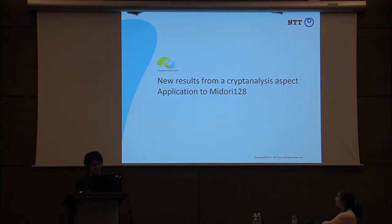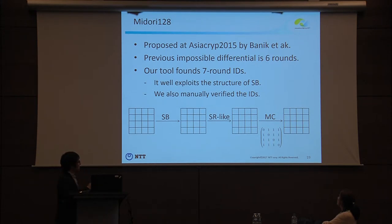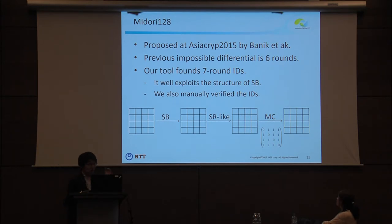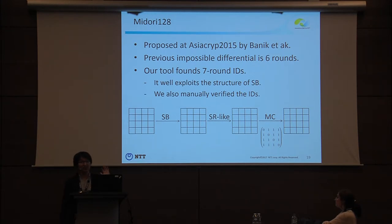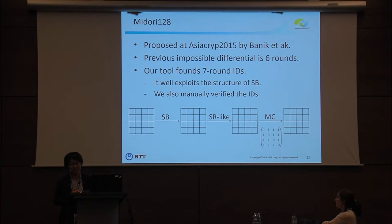Next, the application to Midori. Midori was proposed by Banik et al. at ASIACRYPT 2015. The previous best impossible differential covered 6 rounds, where the S-box was regarded as an ideal S-box. Our tool found a 7-round impossible differential, which fully exploits the structure of the Midori S-box. After finding this impossible differential with our tool, we manually verified why it is indeed an impossible differential.